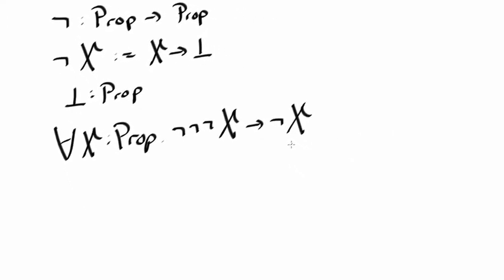So how would we prove this? Well, we would start by assuming we have a proposition X. We would assume we have a proof of the proposition not not not X. And now at the moment we need to prove not X.